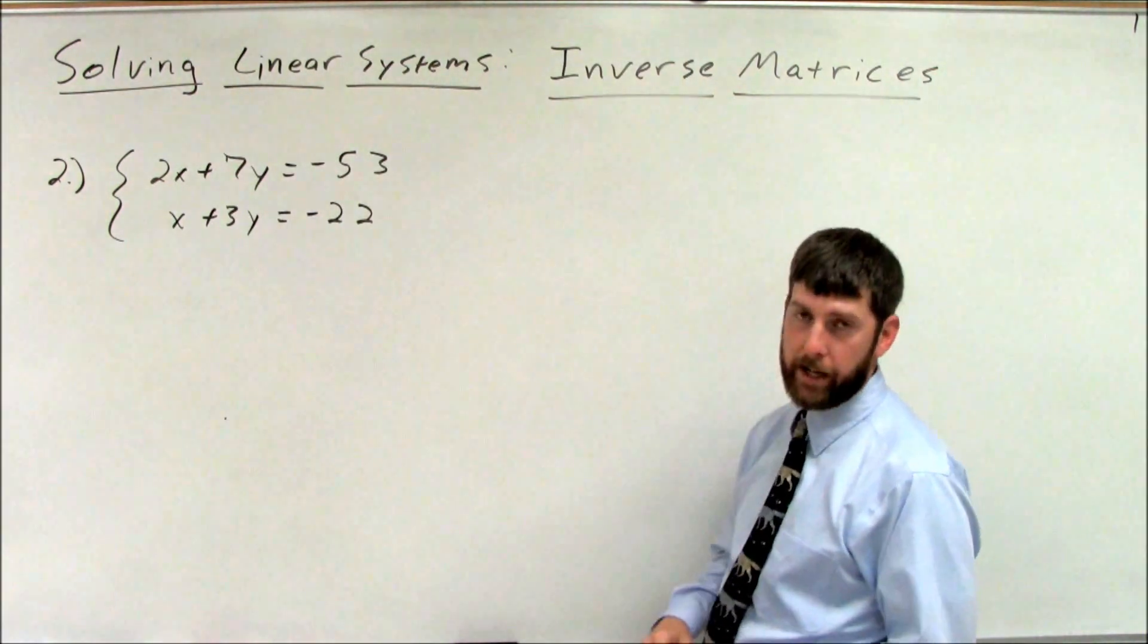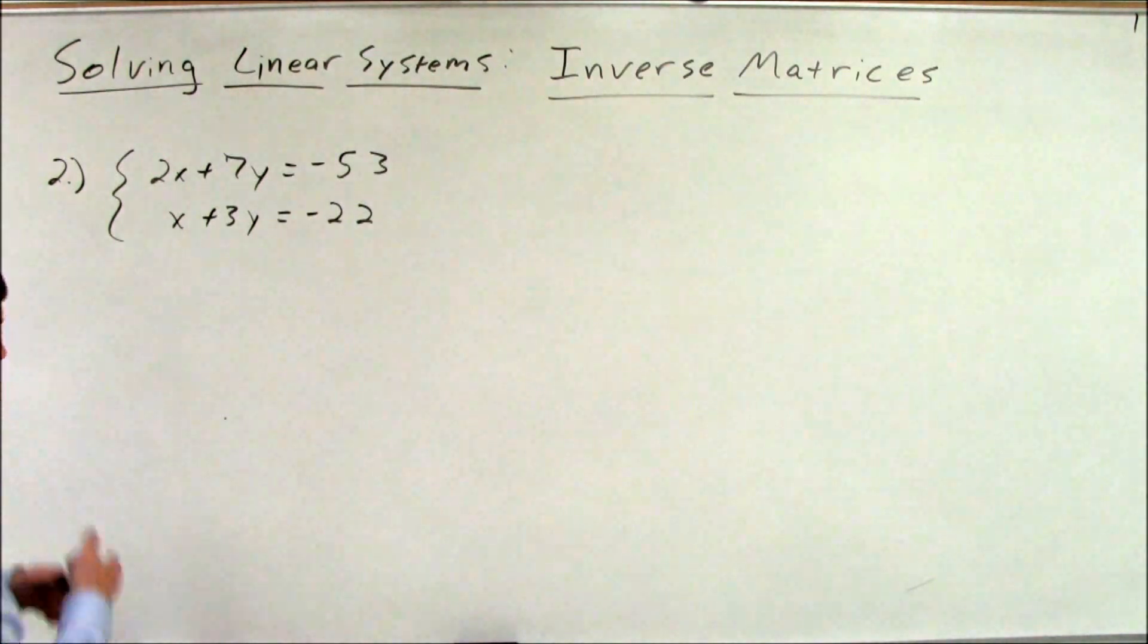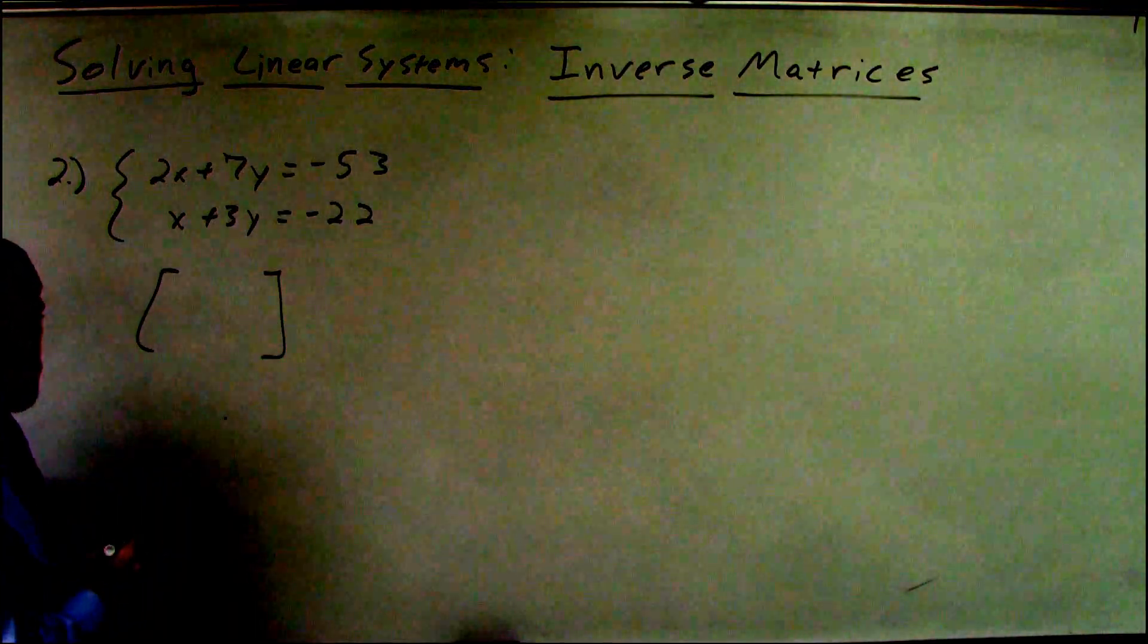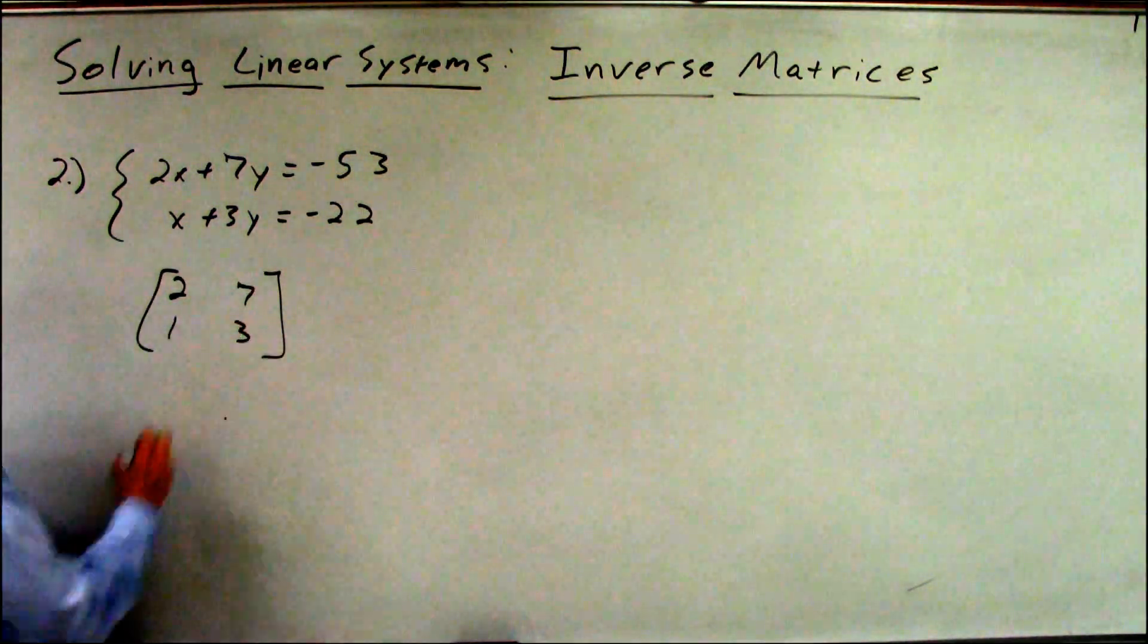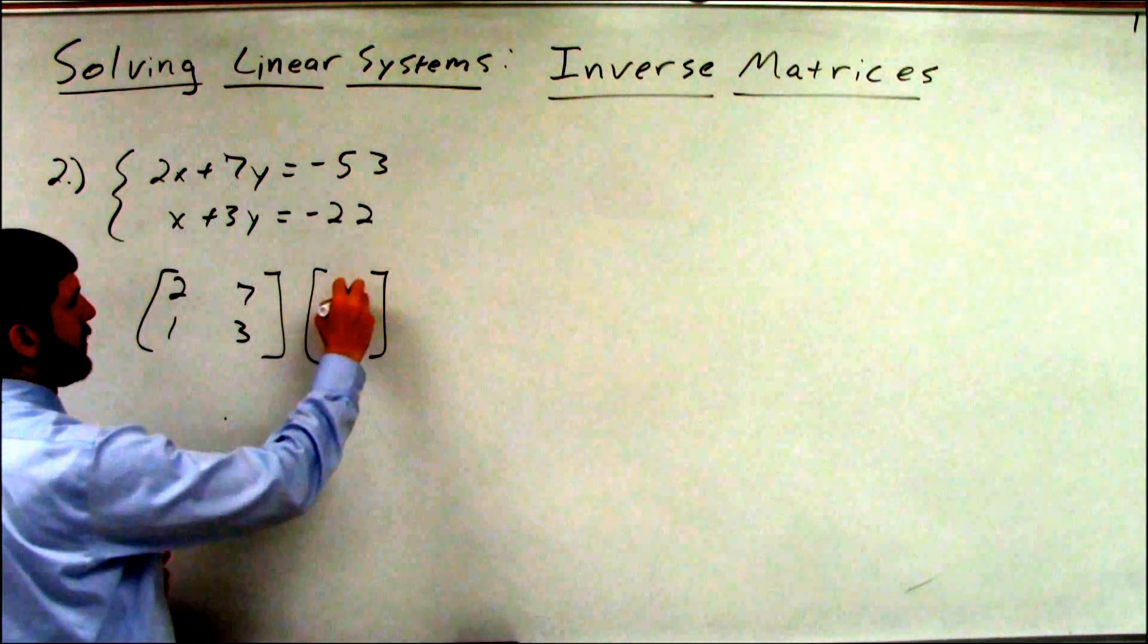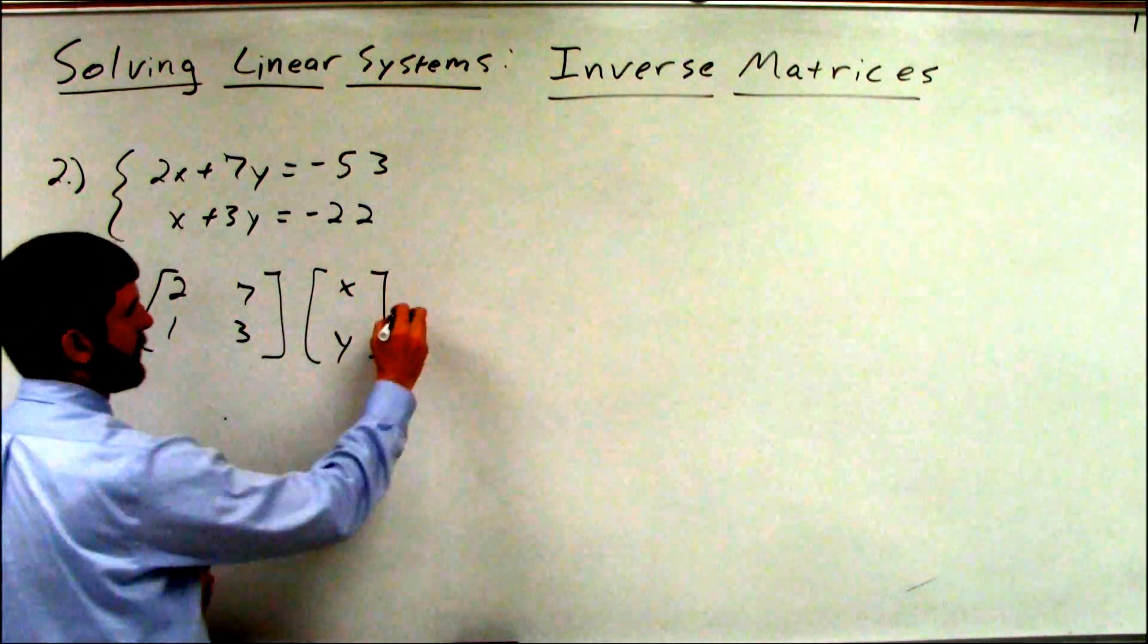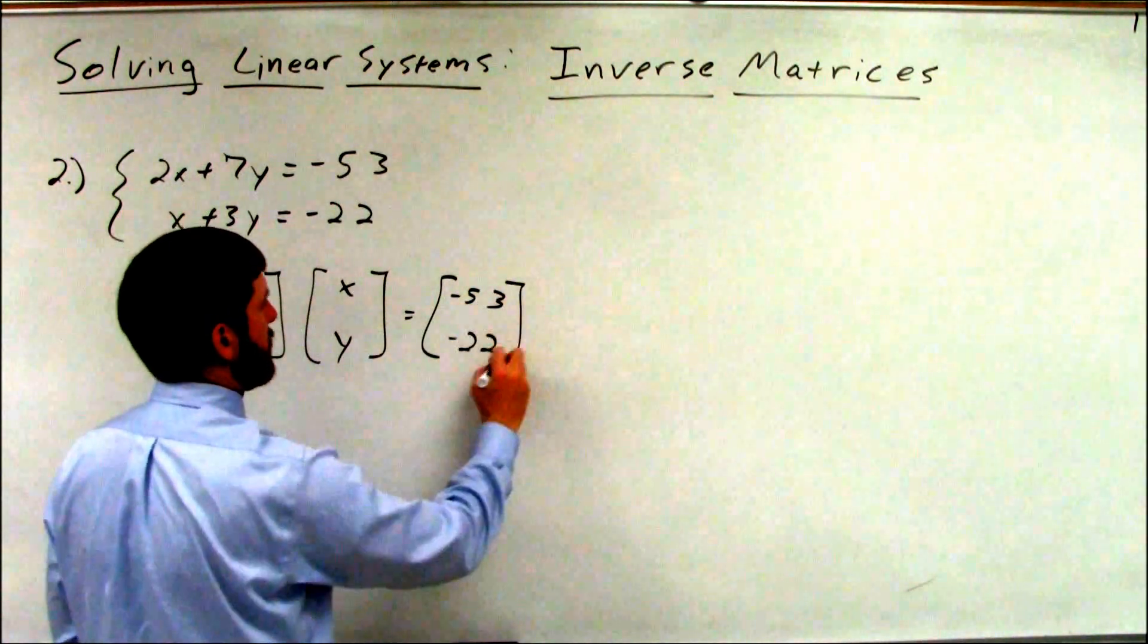All right, hopefully you've got it by now, but let's go through and check your work. First step, write it in matrix form. Coefficient matrix, 2, 7, 1, 3. Variable matrix, x, and y, constant matrix. Negative 53, negative 22.